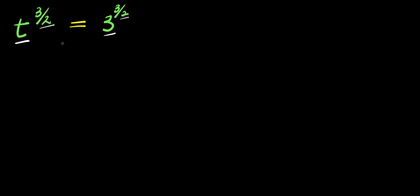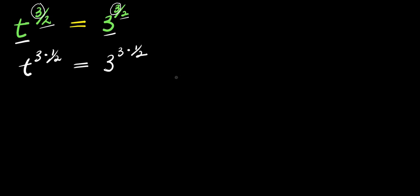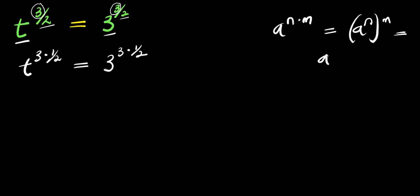The first step will be to factor out this 3 and also factor out this 3. So what we are going to have is t to the power of 3 times 1 over 2, and this equals 3 to the power of 3 times 1 over 2. Now let's consider this identity: if you have a to the power of n times m, this equals a to the power of n, to the power of m.